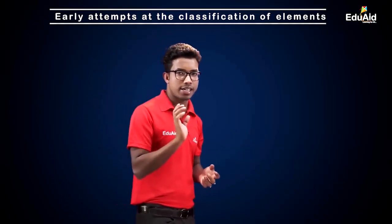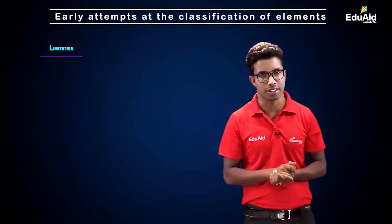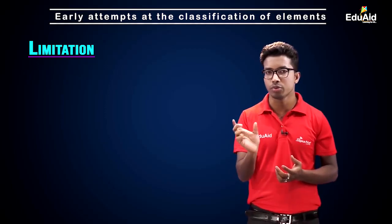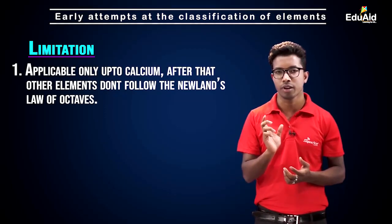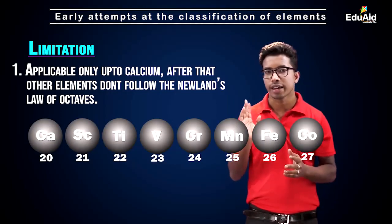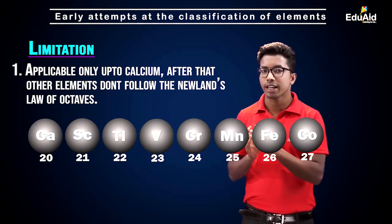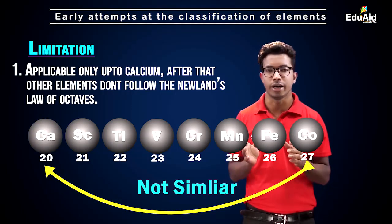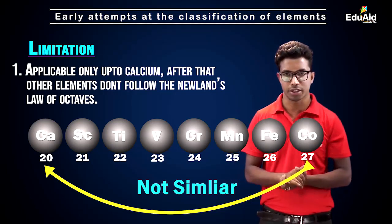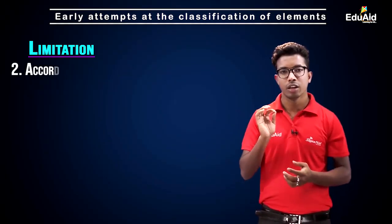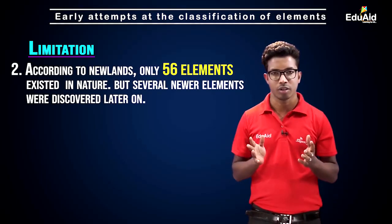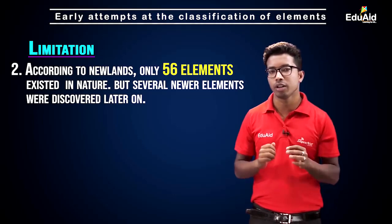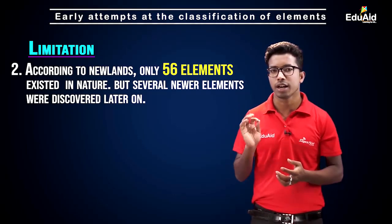Newlands' Law of Octaves has several limitations. The first is that it is applicable only up to calcium — after calcium, elements do not follow this trend. For instance, calcium is the 20th element, and its eighth element would be cobalt (27th), but cobalt and calcium have different properties. The second limitation is that Newlands assumed there were only 56 elements in the universe and no new discoveries would be made, but several new elements were later discovered whose properties did not fit the law.